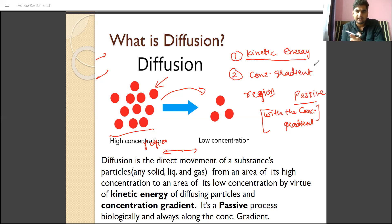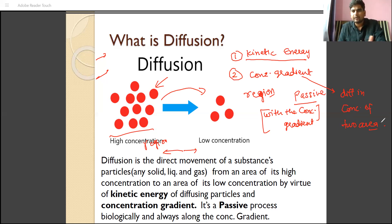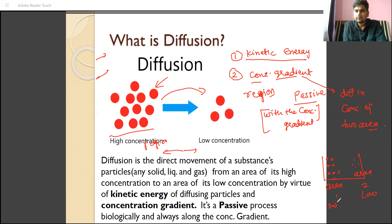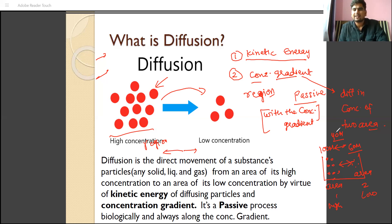If there is no concentration gradient, movement will not occur. Concentration gradient is the difference in concentrations between two areas — one is the high concentration area, another is the low concentration area. Suppose this is a system: area one has higher concentration and area two has lower concentration. If the concentration there is 100 moles and here it is 60 moles, the difference of 40 moles is the concentration gradient. Higher the concentration gradient, more will be the diffusion.